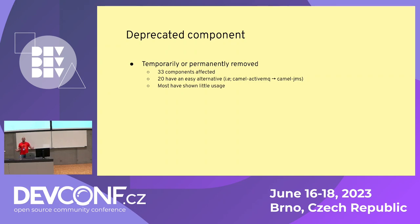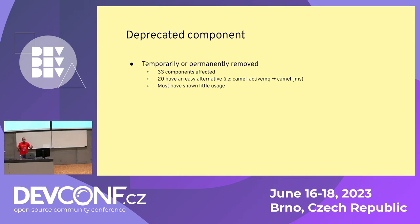As a result of this evaluation, we had 33 components that were affected. Of those, 20 can be easily replaced by others already available in Camel — for example, Camel ActiveMQ, which you can easily replace with Camel JMS. Most of those components have shown little usage based on what we could gather from Jira, mailing lists, messages, and chat requests.